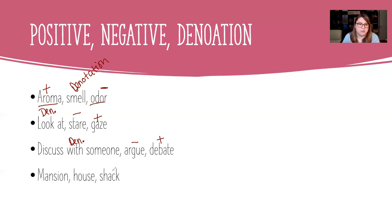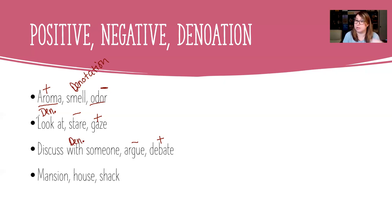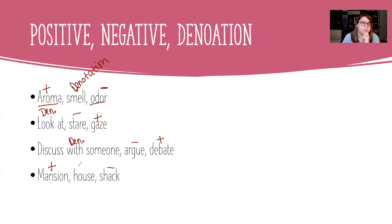Mansion, house, shack — all three mean a place you could live. 'Mansion' carries a positive feeling for me — a bigger, impressive home. 'Shack' is my negative word: a small, run-down, uncared-for building. That means 'house' is the denotation — it represents any place you can live. So mansion is positive, shack is negative, and house is the denotation.